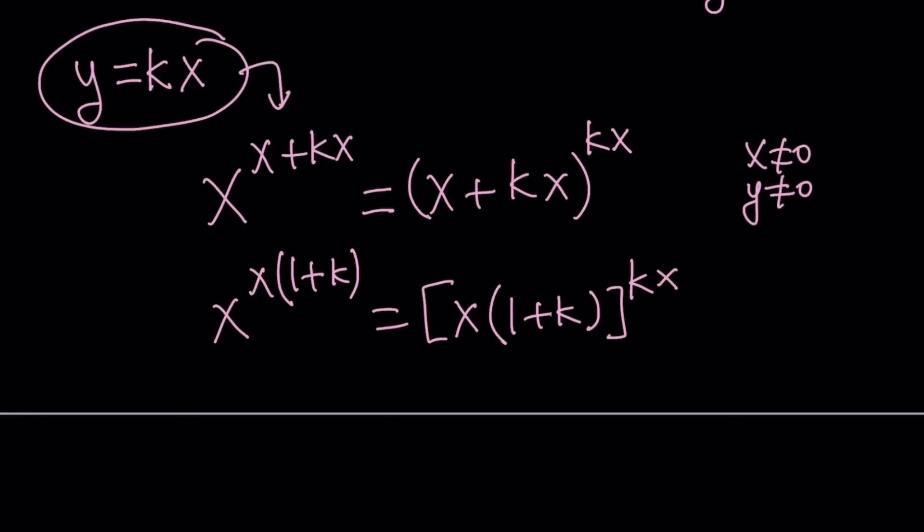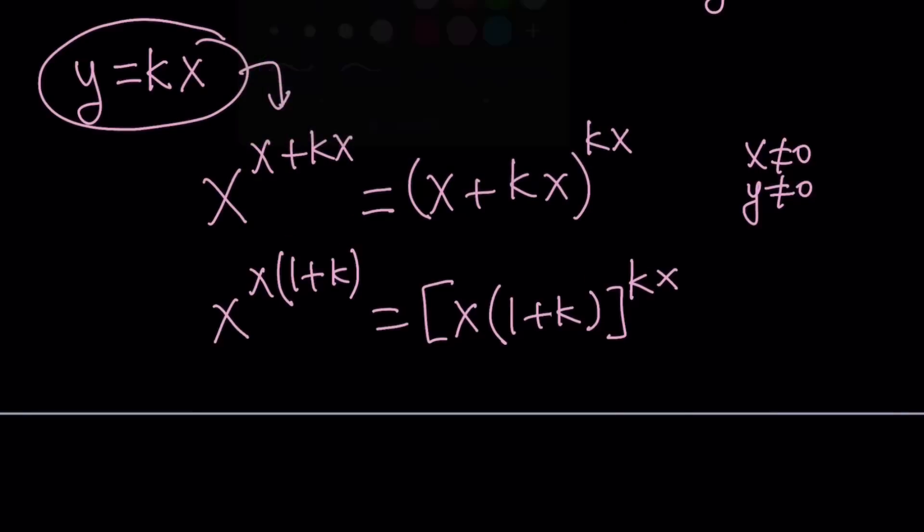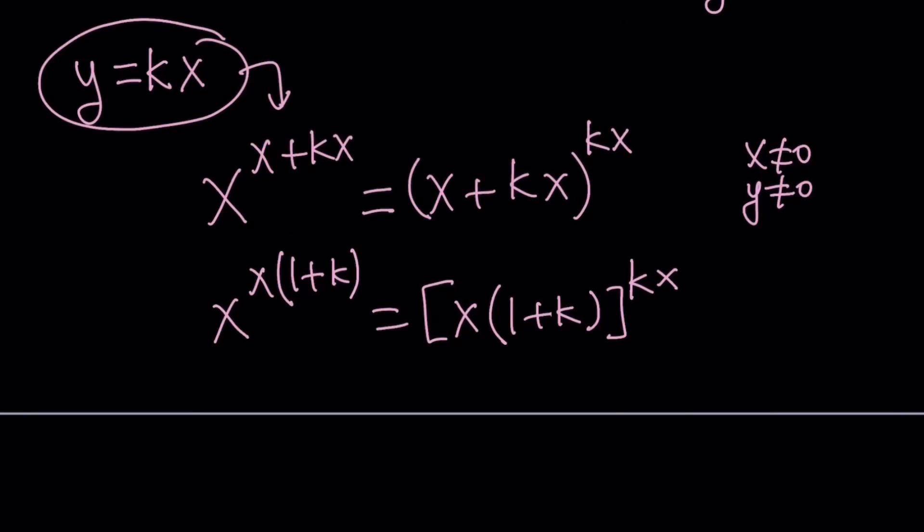Before we do anything with the bases let's simplify the exponents. Since we have x in the exponent on both sides and x does not equal zero I can just go ahead and raise both sides to the power one over x. When we do, the exponents are going to be multiplied. x multiplied by one over x is just going to be one so x cancels out.